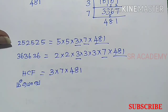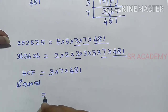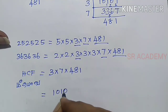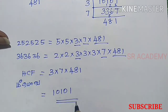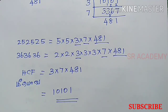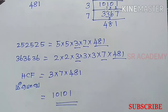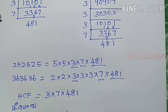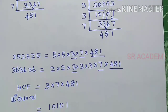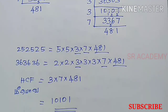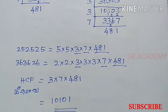Multiplying: the HCF is 10101. This is the answer — the first class of prime factorization method. If you like this video, please like and subscribe to our channel and share it with your friends.